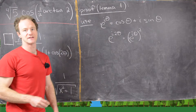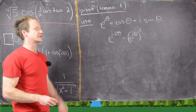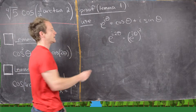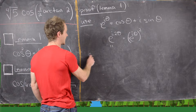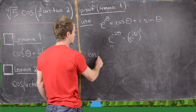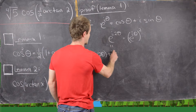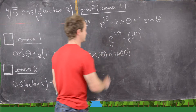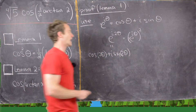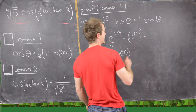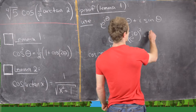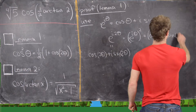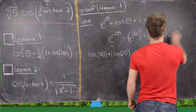Notice that those two are the same quantity using exponent rules. We can write e to the i2θ as cosine of 2θ plus i sine of 2θ. And then we can write e to the iθ squared as cosine of θ plus i sine of θ, quantity squared.